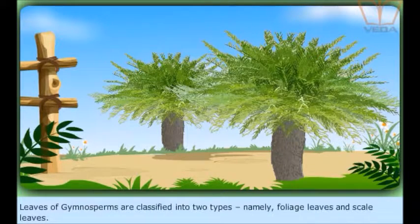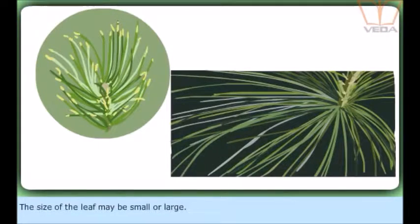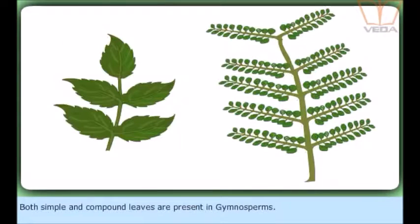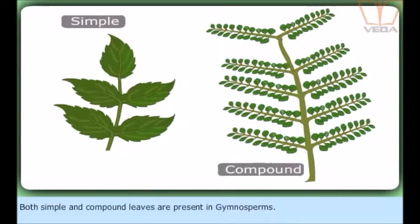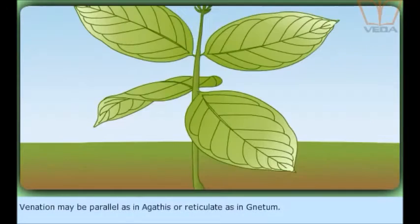Leaves of gymnosperms are classified into two types, namely foliage leaves and scale leaves. The size of the leaf may be small or large. The leaves may be pinnate as in Cycas or needle-shaped as in Pinus. Both simple and compound leaves are present in gymnosperms. Venation may be parallel as in Agathis or reticulate as in Gnetum.